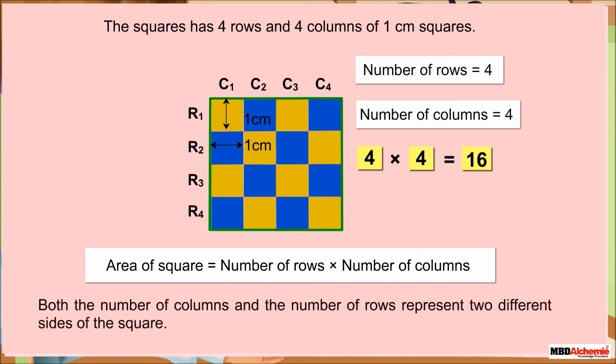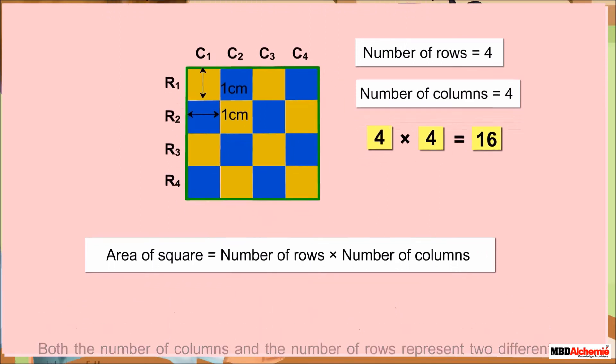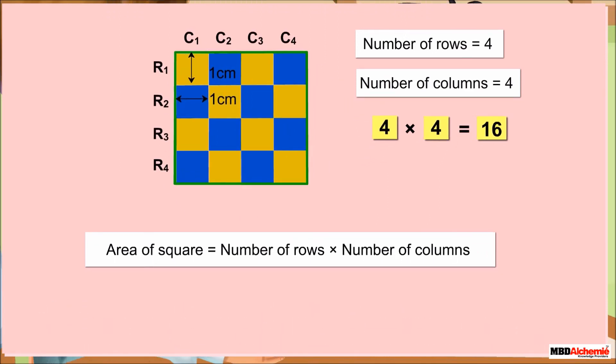Both the number of columns and the number of rows represent two different sides of the square. So, we conclude that the area of a square is equal to side multiplied by side.